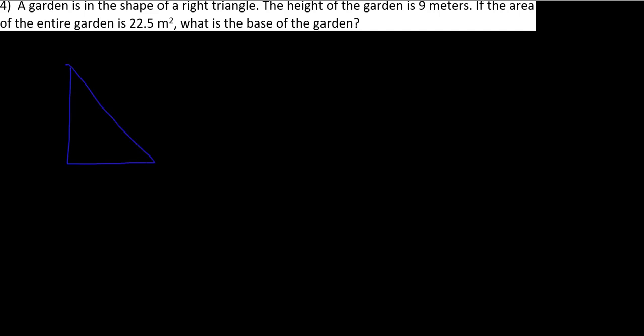The height of the garden is nine meters. So nine meters is going to be our height from here to here. If the area of the garden is 22.5 meters squared, what is the base of the garden? So it's this thing down here that we're trying to figure out.